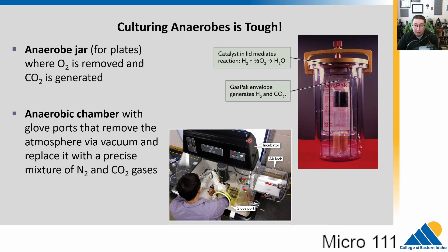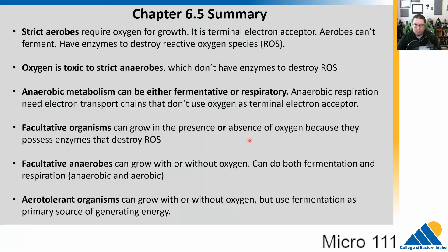There are a lot of anaerobic diseases — things like tetanus, botulism, and gangrene are all caused by common anaerobic microbes. To summarize: strict aerobes require oxygen for growth because it is the terminal electron acceptor that allows them to make ATP. They have enzymes to destroy reactive oxygen species but generally cannot ferment.